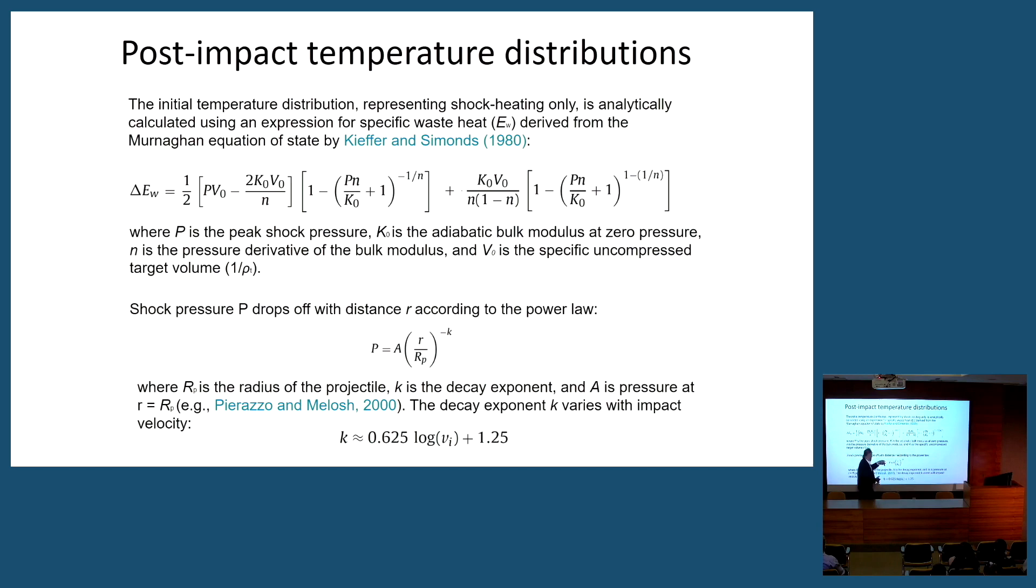And we're going to compress this target volume with a shock pressure. But that shock pressure drops off with distance r here, according to a power law. Because you are striking a surface, you're causing an explosion to occur, and the energy very quickly dissipates around it. This has been verified by nuclear bomb tests. Much of this science was created after the nuclear bomb test treaty prohibited any kind of weapons testing at the surface. Pizarro and Malash in 2000 also showed that the decay of the exponent and the pressure relationship varies with impact velocity.